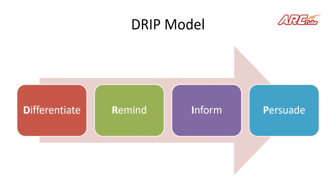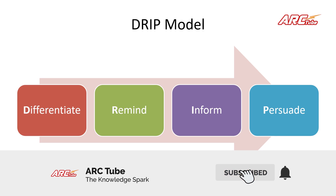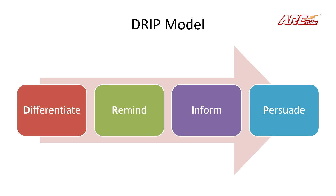The DRIP model helps you develop promotional objectives. DRIP stands for Differentiate, Remind, Inform, and Persuade. The first D is Differentiate — how are you going to differentiate yourself from market competition, and how will you differentiate the benefits and value additions you provide to customers and stakeholders?